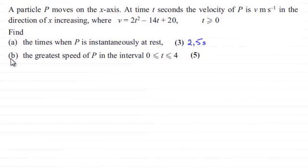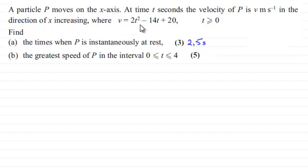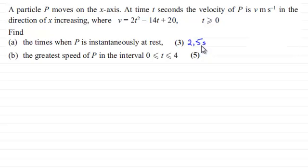Hi there. Before doing part B of this question, just to recap: we were given a particle P that moves on the x-axis, and at time t seconds the velocity of P was v metres per second in the direction of x increasing, where v equals 2t squared minus 14t plus 20, and t is greater than or equal to zero. In part A we had to find the times when P was instantaneously at rest, and we worked out that t equals 2 and t equals 5 seconds.